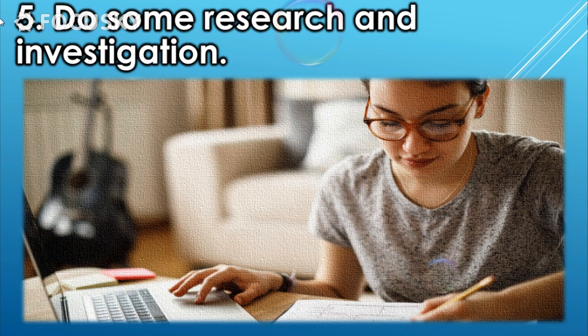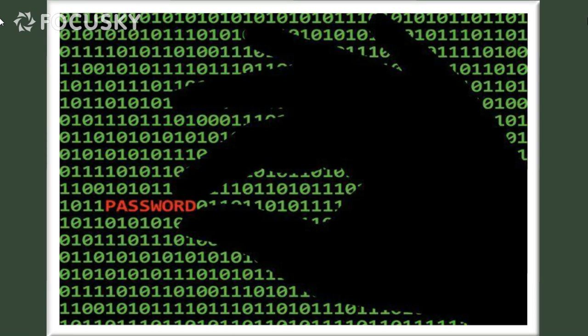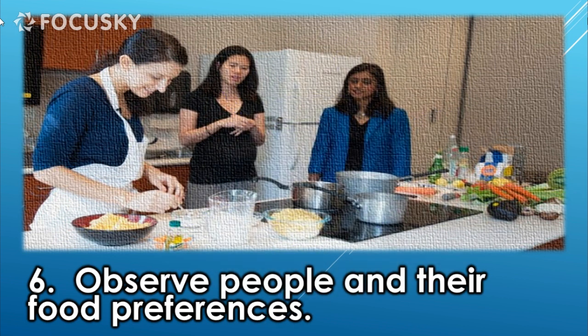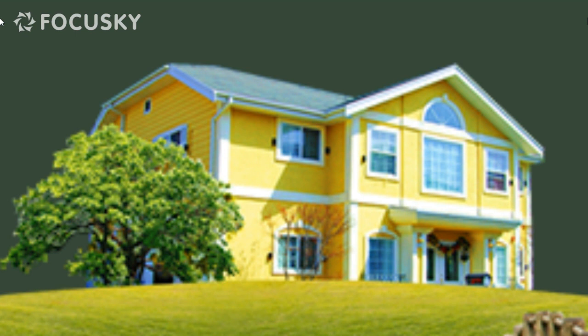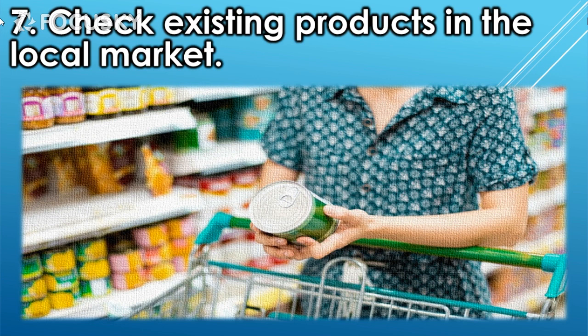Five: do some research and investigation. Six: observe people and their food preferences. Seven: check existing products in the local market.